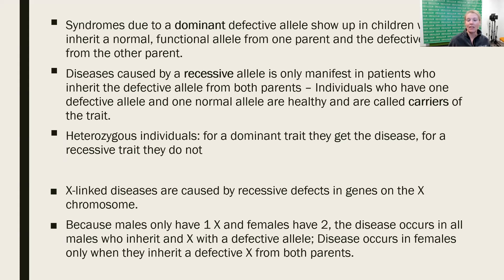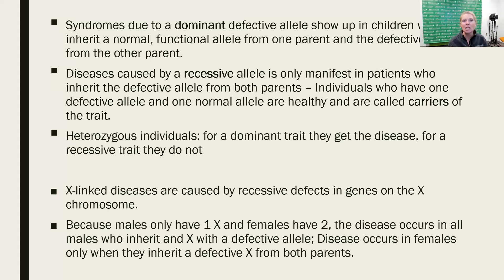Recessive alleles are the opposite in that they're only going to be expressed phenotypically if both alleles are recessive. If there is one correct, non-defective gene, it will compensate and take care of that defective gene, so we typically don't see any immunodeficiency manifestations. These individuals who carry one recessive allele are called carriers, because they can pass that recessive onto their offspring. If they create an offspring with someone else who also passes a recessive, then that child would have two defective copies and therefore would have the immunodeficiency.